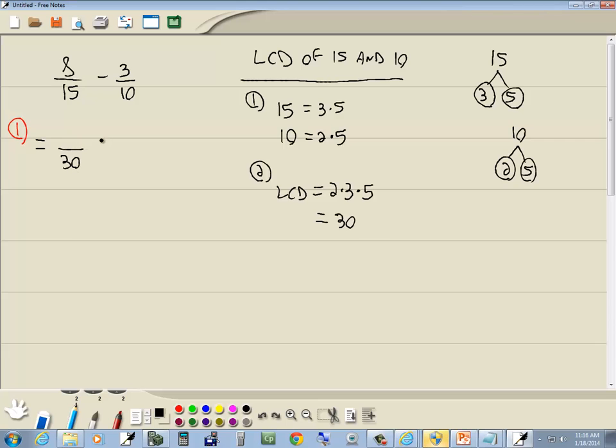So we're going to rewrite each fraction with our new denominator. Now you look at your old denominator and you ask, what did you multiply by to get your new one? So we went from 15 to 30. We multiplied the bottom part by 2. So we have to multiply the top part by 2.